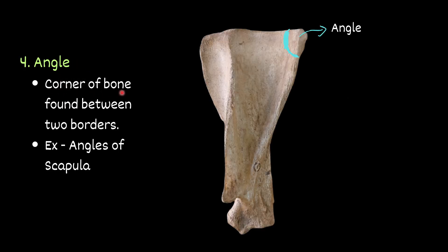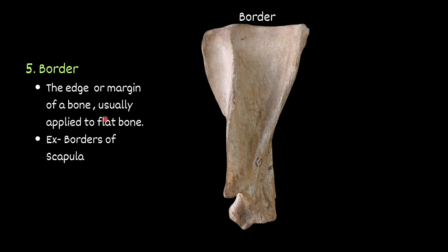Angle — the corner of a bone, found between two borders. For example, angles of the scapula. This is one border, and this is one border; where they meet is the angle. When we discuss the scapula in detail I will tell the names — just now understanding what angle means: corner of bone found between two borders. Border — the edge or margin of a bone, usually applied to a flat bone. These are the borders of the scapula: this is one border, this is one border, and this is one border.